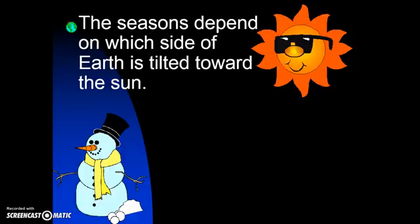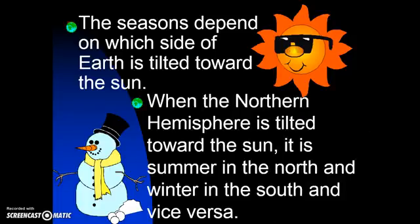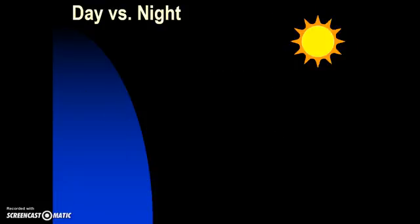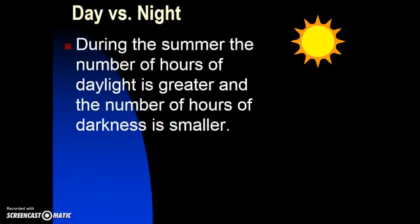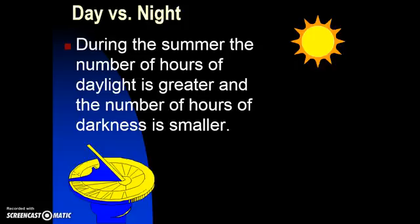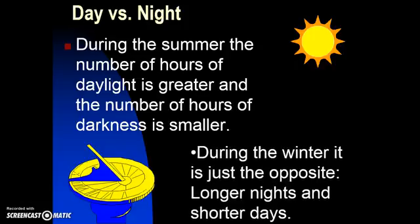The seasons depend on which side of the Earth is tilted toward the Sun. When the Northern Hemisphere is tilted toward the Sun, it is summer in the North and winter in the South and vice versa. During the summer, the number of hours of daylight is greater and the number of hours of darkness is smaller. During the winter, it's just the opposite. We have longer nights and shorter days.